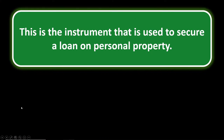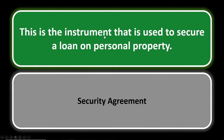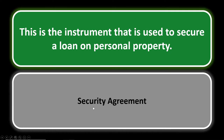Personal property number four: what is the instrument used to secure a loan on personal property? When dealing with real property you think of a mortgage or a trust deed, but with personal property the instrument used to secure a loan is a security agreement.